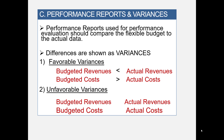On the other hand, if budgeted revenues are greater than actual revenues, it's unfavorable. And if budgeted costs are less than actual costs, it's also unfavorable.